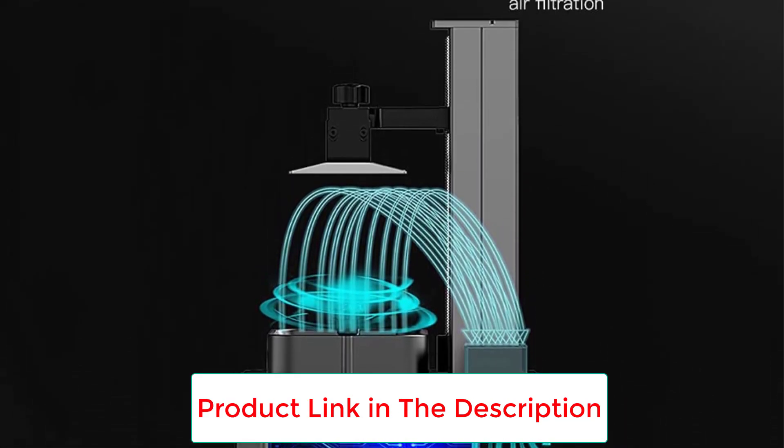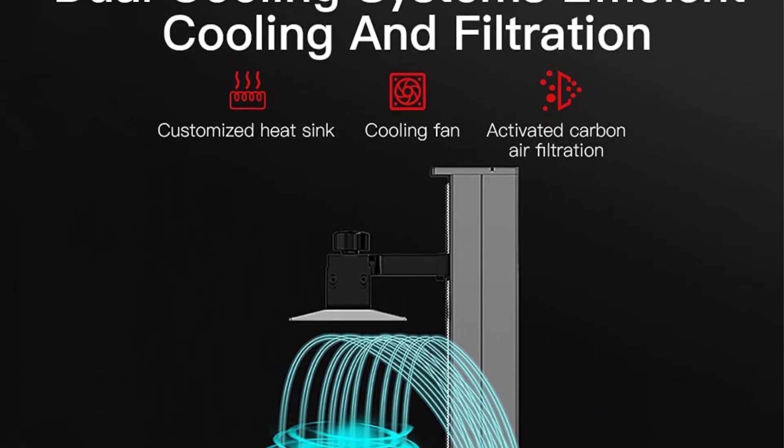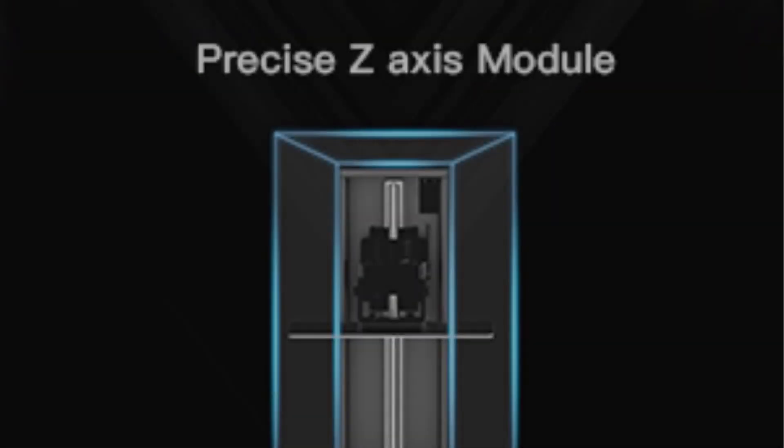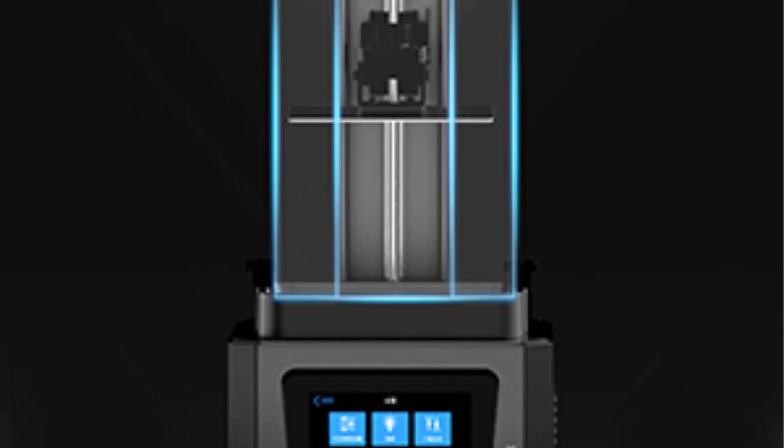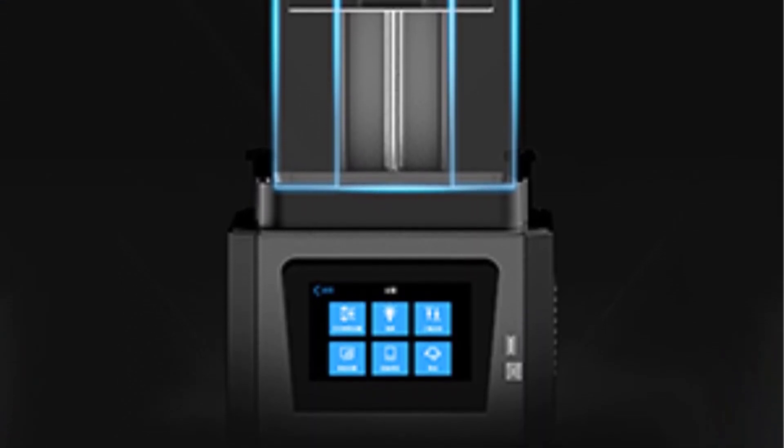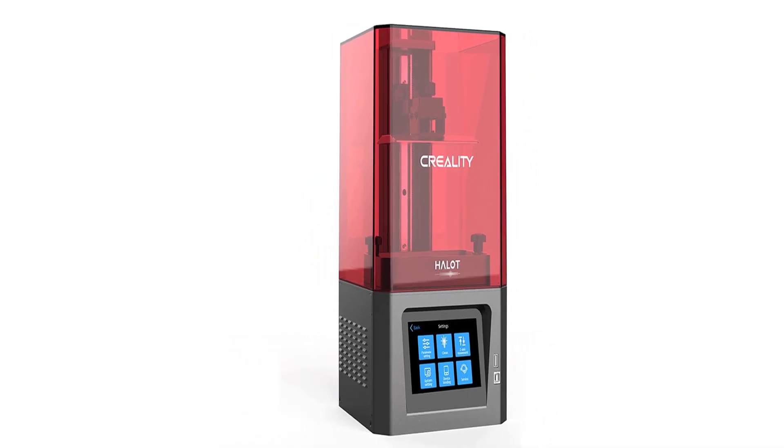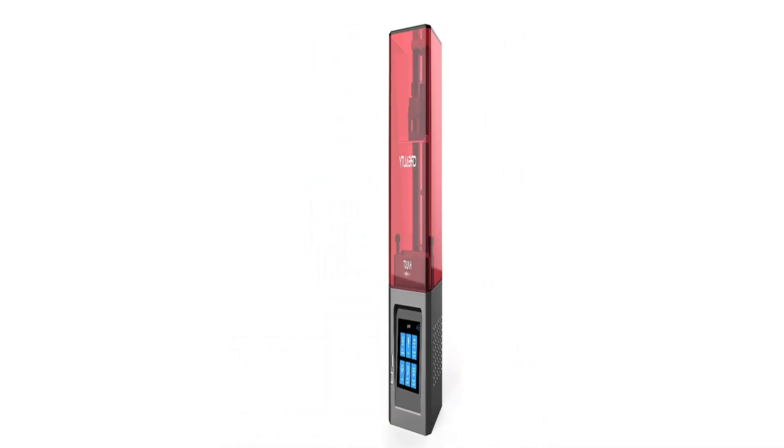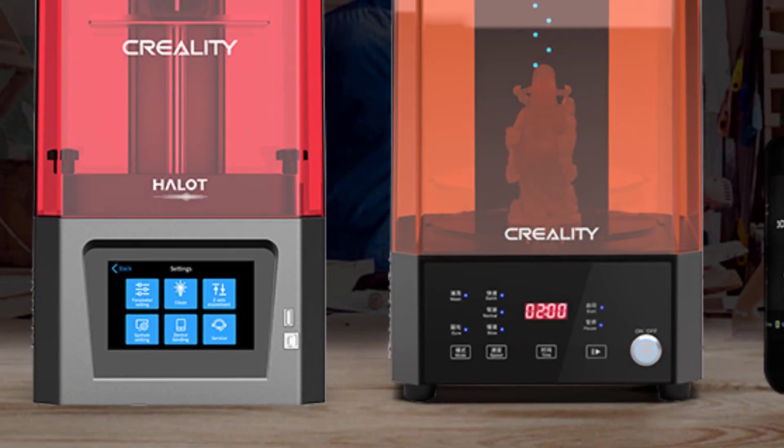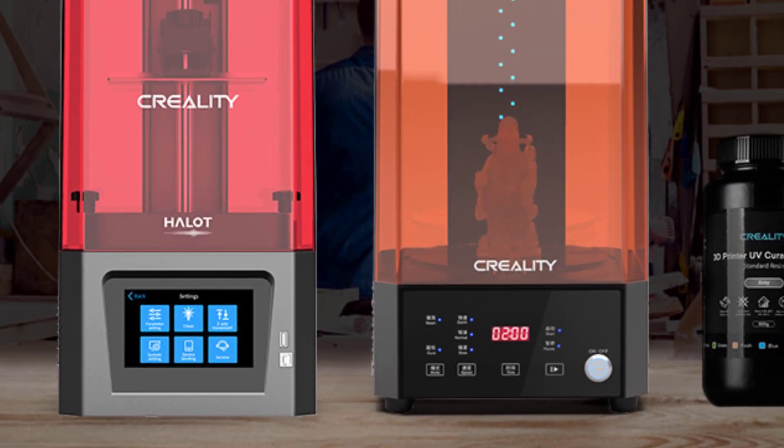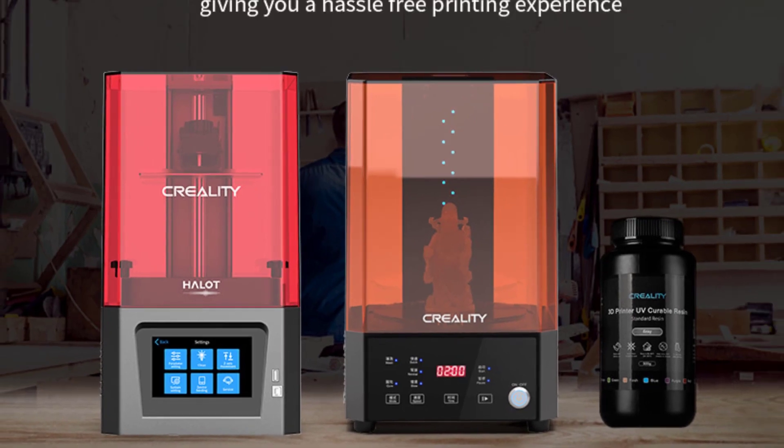Creality CL60 MSLA 3D printer is equipped with a 6-inch monochrome LCD of 2K HD 2560x1620 resolution, only taking 1-4 seconds per layer exposure to cure resin, which could significantly increase your printing efficiency and save your time. Moreover, monochrome LCD screen has a much longer lifespan and stable performance during long-time printing, saving costs for you and ensuring incredible printing quality.